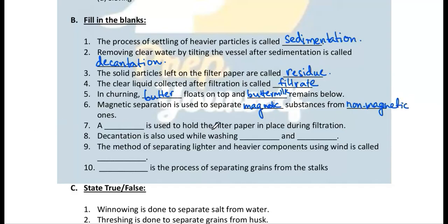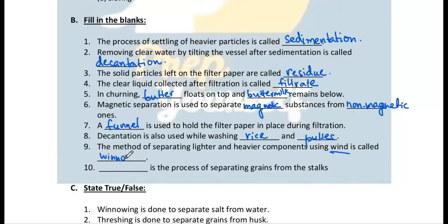Number 7: A funnel is used to hold filter paper in place during filtration. Number 8: Decantation is also used while washing rice and pulses. Number 9: The method of separating lighter and heavier components using wind is called winnowing. Number 10: Threshing is the process of separating grains from the stalks.